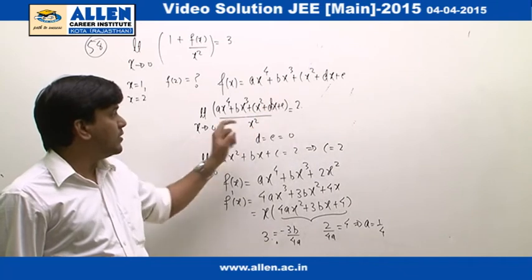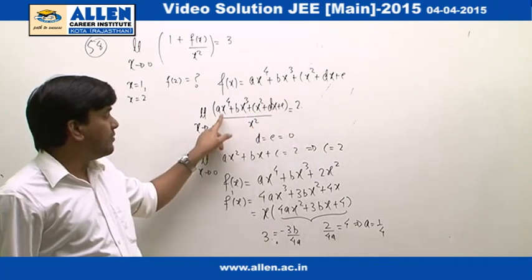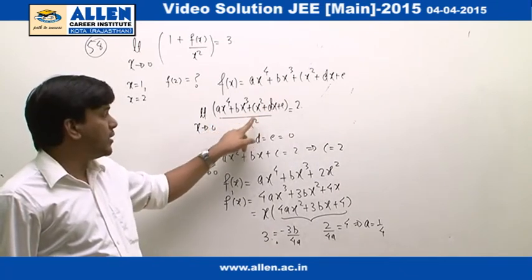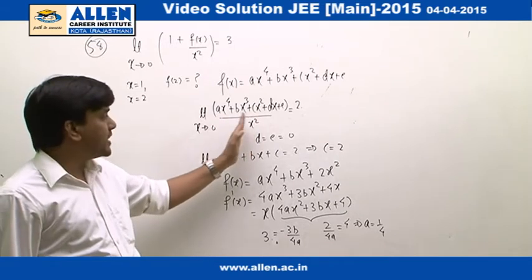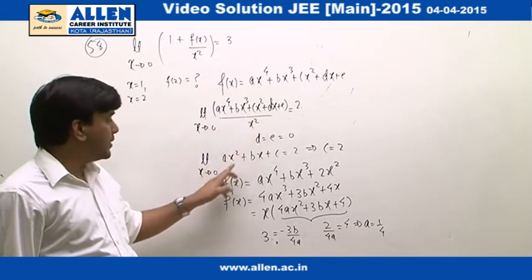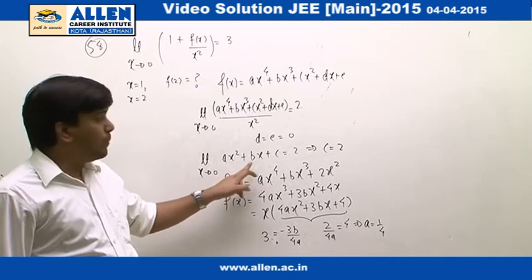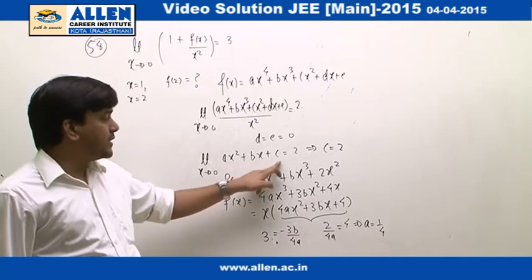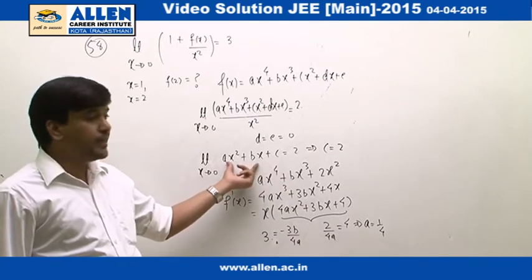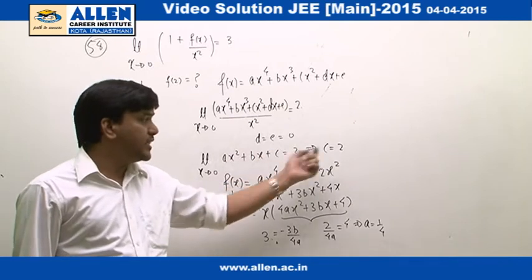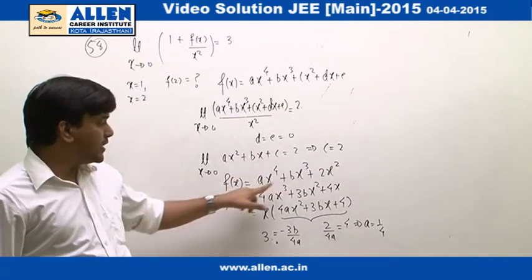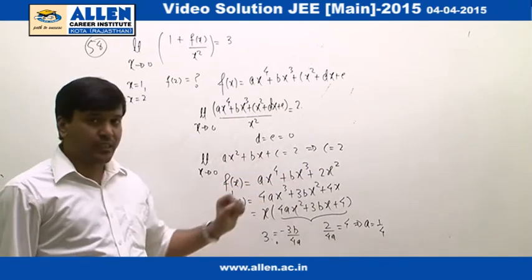With d and e removed, we are left with (ax⁴ + bx³ + cx²)/x². Separating all three terms gives ax² + bx + c = 2. As x approaches 0, the first two terms vanish, and hence the value of c equals 2. So f(x) is ax⁴ + bx³ + 2x².